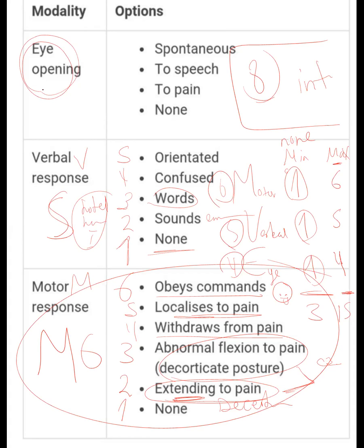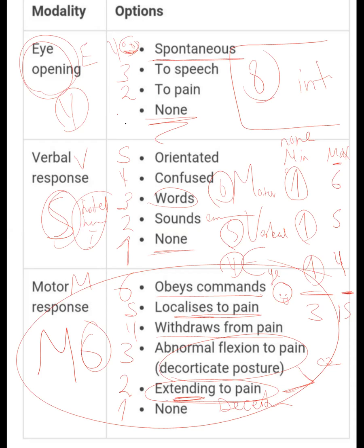For eye opening, spontaneous eye opening takes four. If you talk to the patient and say 'please open your eyes' and they open to speech, they take three. If you apply a supratrochlear or trapezius painful stimulus and they respond, they take two. If none, the patient takes one.